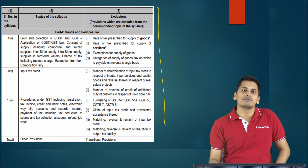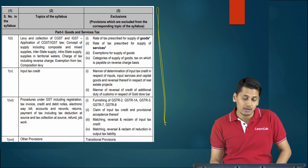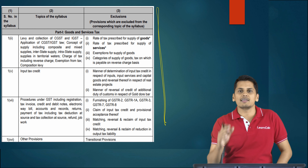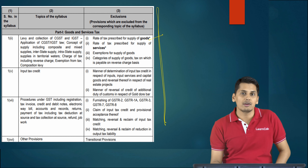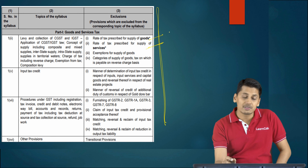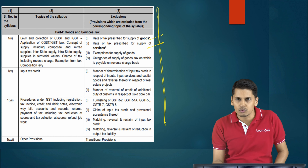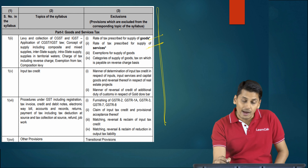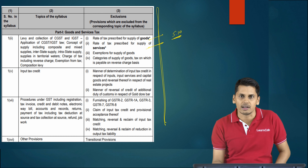Now friends, good things first — the exclusions given by the study guidelines of ICAI as applicable for November 2019. Rate of tax prescribed for supply of goods is not required. Rate of tax prescribed for supply of services is not required. You need not remember the rate of tax for goods and services. However, you do have to remember the rate of tax applicable for a composition taxable person who pays taxes under Section 10.